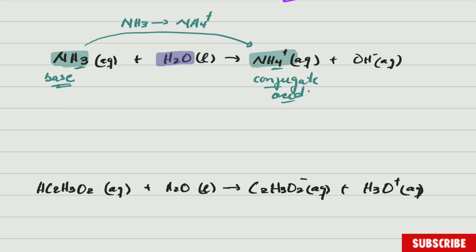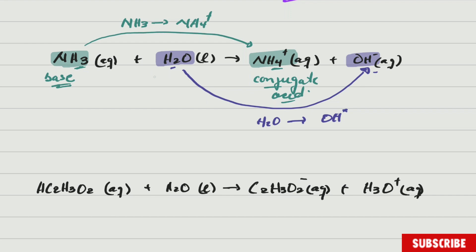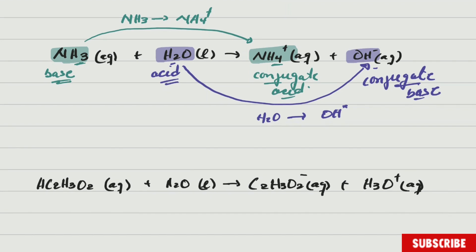For the other substance in this reaction, which is water: you have H₂O and you have OH⁻. From reactants to product, one hydrogen is gone — you're starting with two hydrogens and you have only one — so H₂O became OH⁻. One hydrogen was lost, therefore H₂O is the acid and OH⁻ is the conjugate base. Quite simple.